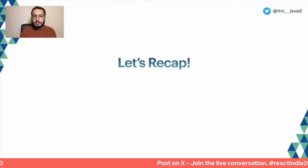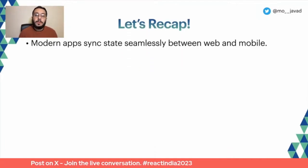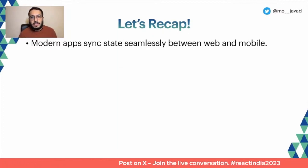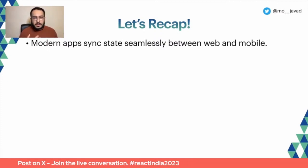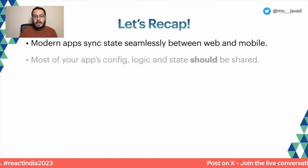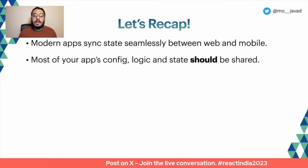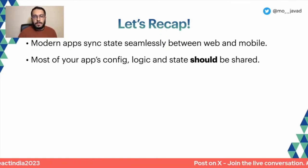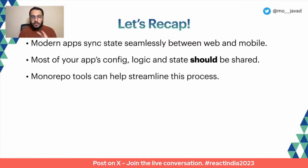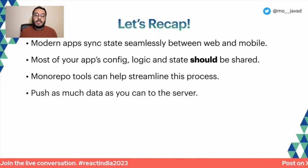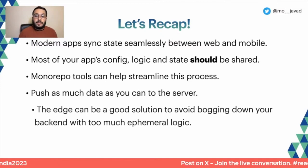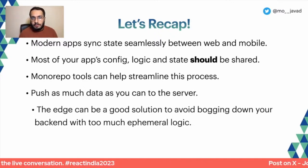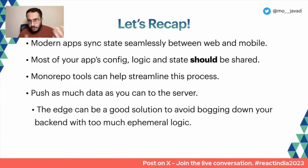Let's do a quick recap. Firstly, modern apps come with the expectation from users that state syncs seamlessly between web and mobile. Whether you look at Apple's or Google's ecosystem, the expectation is that apps will do a lot of syncing behind the scenes. We've learned that in practice you can share most of your app's config, logic, and state — and you should, because it maintains feature parity and reduces work. We've looked at monorepo tools and seen they can streamline this process. And we've talked about how pushing as much data as possible to the server side — with the edge as a powerful, close-to-user backend — can handle ephemeral logic like search histories and app state without bogging down your existing backend.